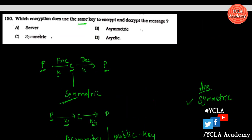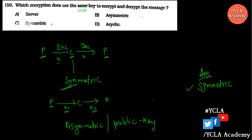The first question is: which encryption uses the same key to encrypt and decrypt a message? If you have plain text and want to convert to ciphertext, you use one key. If you use the same key to go back to plaintext, that technique is called symmetric key encryption. If you use a different key, it would be asymmetric or public key encryption.